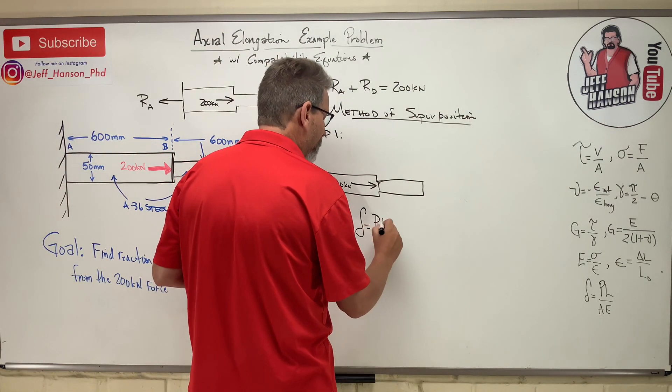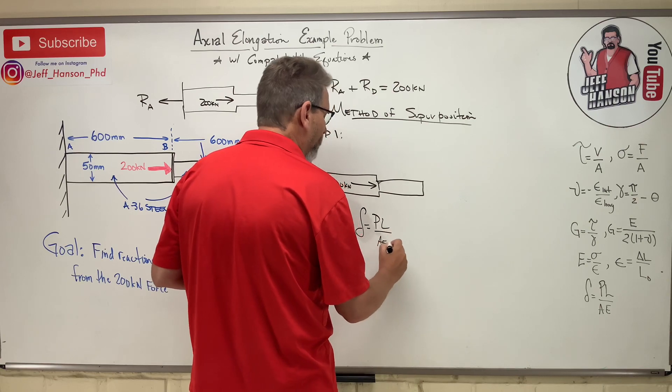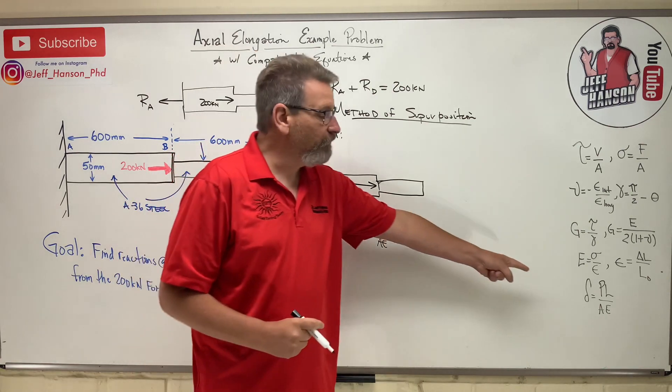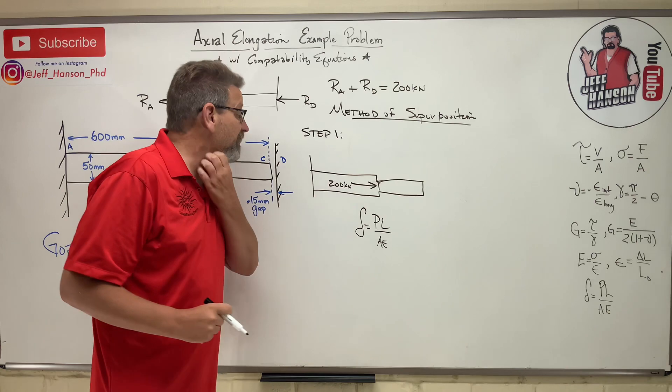So we'll find that by delta equals PL over AE, our play equation, right? There he is right there. We talked about that in last video.